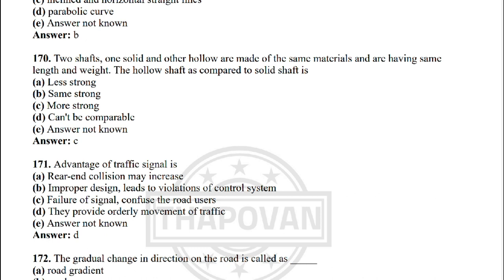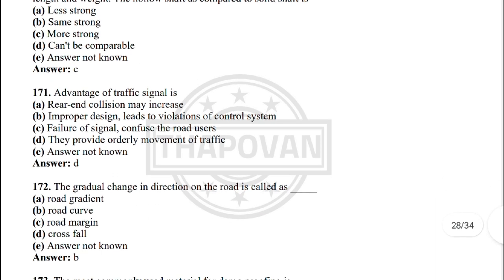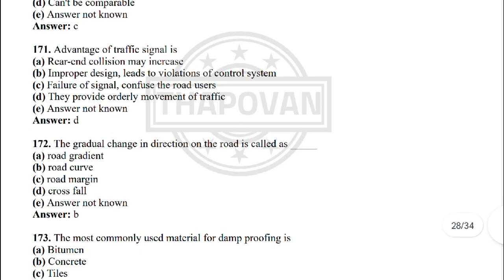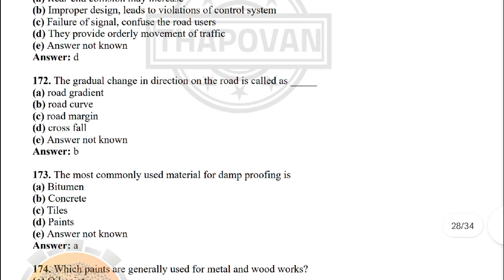Next: two shafts, one solid and the other hollow, are made of the same material and have the same length and weight. The hollow shaft compared to the solid shaft is — the correct answer is option C: more strong. Next: the advantage of traffic signals is — the correct answer is: they provide orderly movement of traffic.